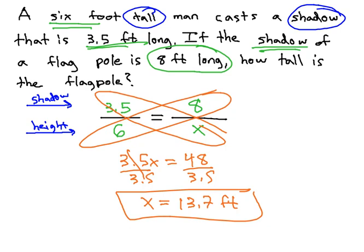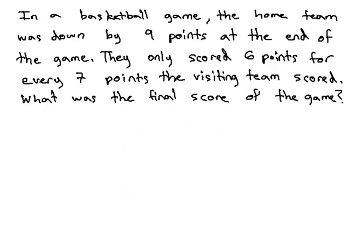Let's try another example that's a little more involved. In this problem, we have a basketball game, where the home team was down by 9 points at the end of the game. This is because they only scored 6 points for every 7 points the visiting team scored. Our question is, what was the final score of the game?